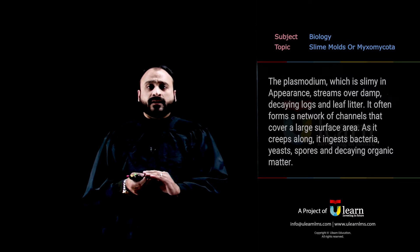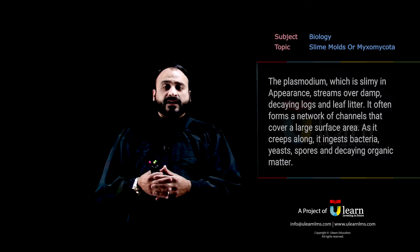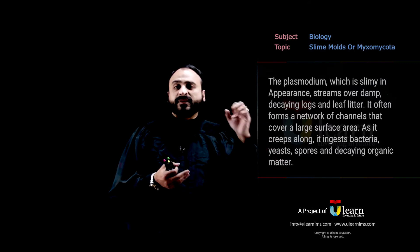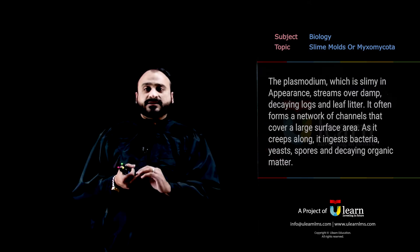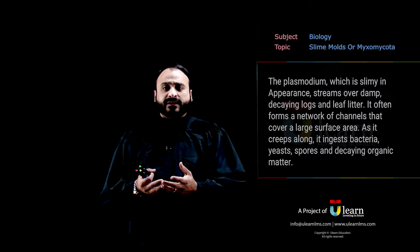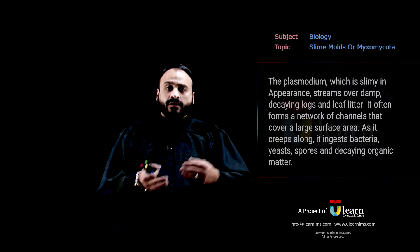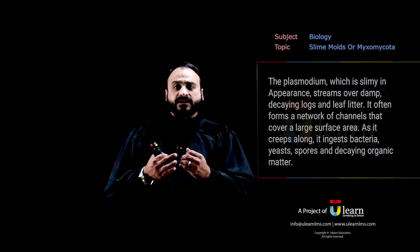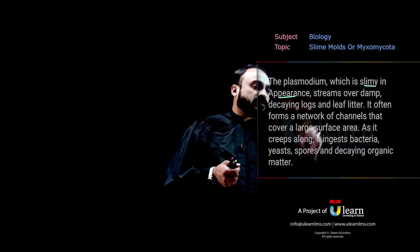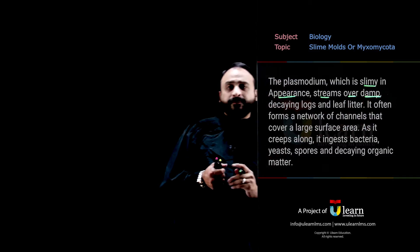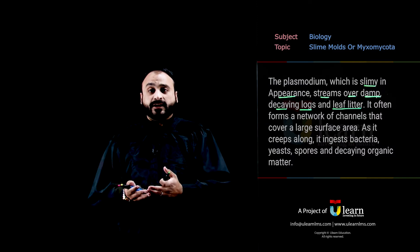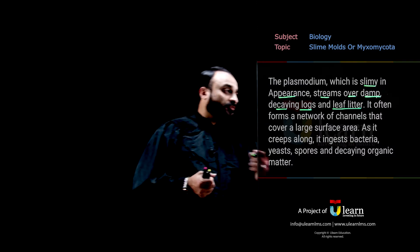The plasmodium grows easily in moist environments where decaying organic material is found. It obtains food from there, creeping through that environment and ingesting even bacteria and small protists. The plasmodium, with its slimy appearance, streams over damp decaying logs and leaf litter, which are rich sources of organic material.